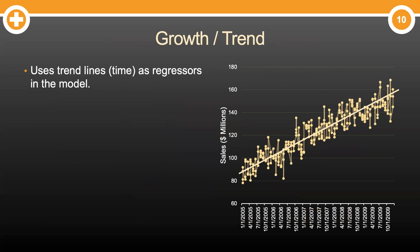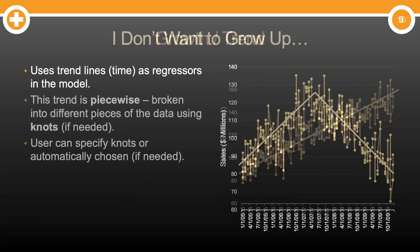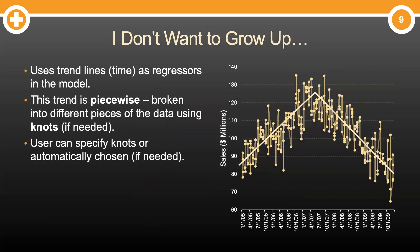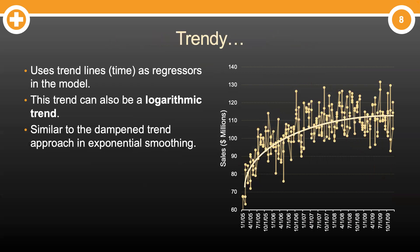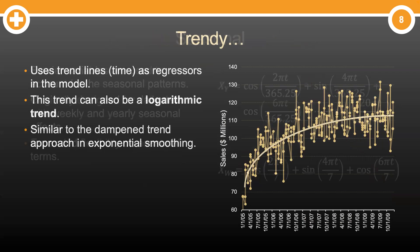Let's break down each of these separately. First, growth — also called trend. Basically, the Prophet model uses trend lines, or time itself, as a regressor in the model. Simple, right? But what if your data doesn't follow a purely linear trend? No fear — Prophet models growth in multiple ways. The trend that Prophet models is a piecewise trend. In other words, it selects knot values, or inflection points, where it literally creates two lines around that inflection point to best fit your data. These knot values are automatically selected, similar in fashion to a MARS algorithm used in piecewise linear regression. Of course, trend lines don't have to be linear either — you could have a dampened trend, very similar to the dampened trend in exponential smoothing models.